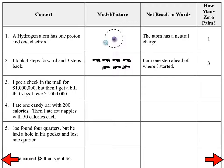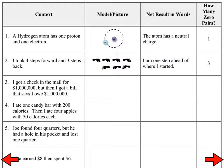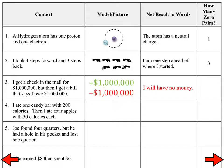Number two: I took four steps forward and three steps back. The net result is that you're one step ahead of where you started. There are three zero pairs created there because when you take one step forward and one step backward, you're basically in the same place that you started. Number three: I got a check in the mail for $1 million, so briefly you thought you were very rich. But then I got a bill that says I owe $1 million. Your net result from that is that you now have no money. How many zero pairs were created in that situation?